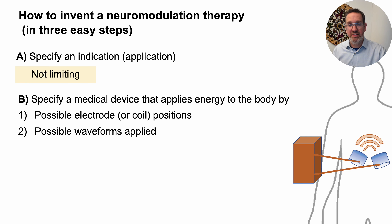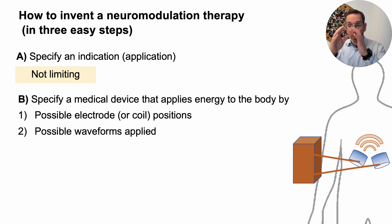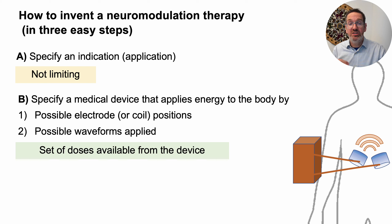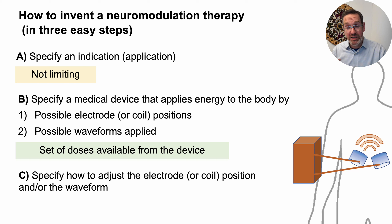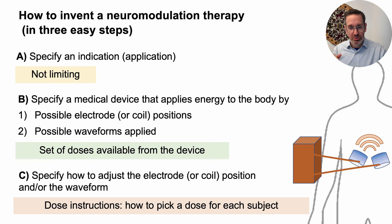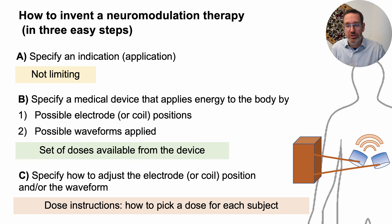The second step is to specify the design of the device in terms of dose. Remember, there are two aspects to dose: where it could be placed and the waveforms applied to it. Rather than picking just one, you pick a set — the possible electrode placements, coil designs, and possible waveforms. This is the dose set your device can provide. The third and final step is to provide dose instructions: how to pick from the possible dose set for each subject. If the device can provide between 1 Hz and 1000 Hz, how do you adjust the frequency for that subject? This step is essential for neuromodulation invention.